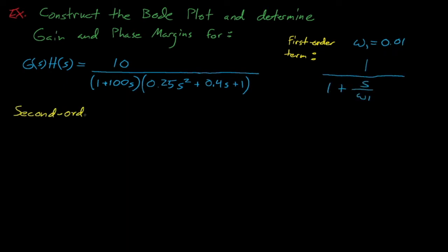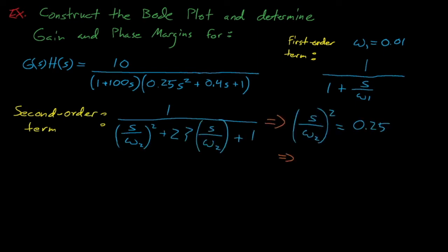The (1 plus 100 times s) term has a breakaway frequency omega 1 at omega equals 0.01. Next, we solve for the second denominator term's breakaway frequency, omega 2, which we see equals 2, and then we can solve for squiggle, which we see equals 0.4.